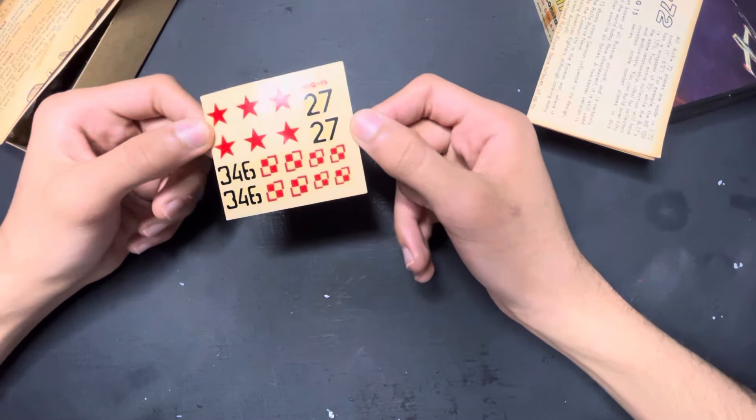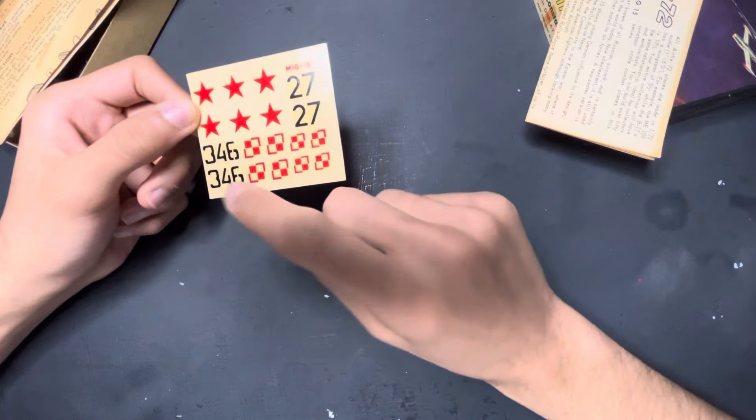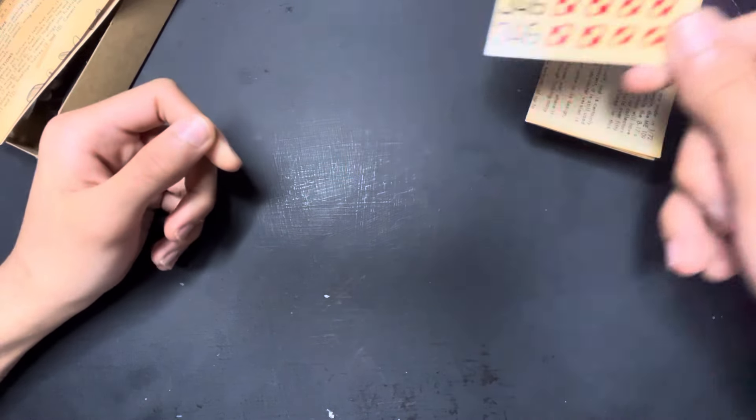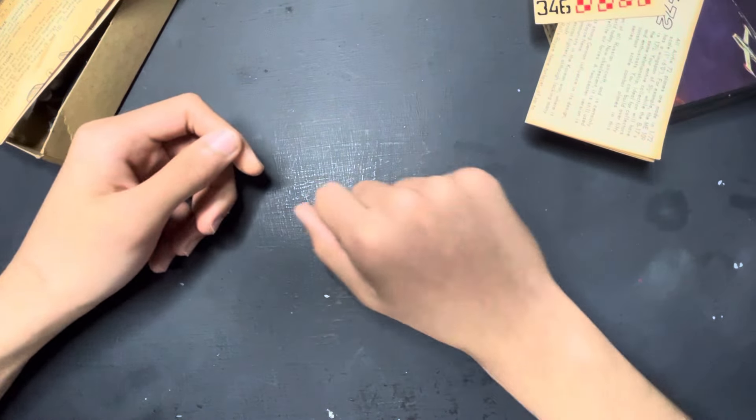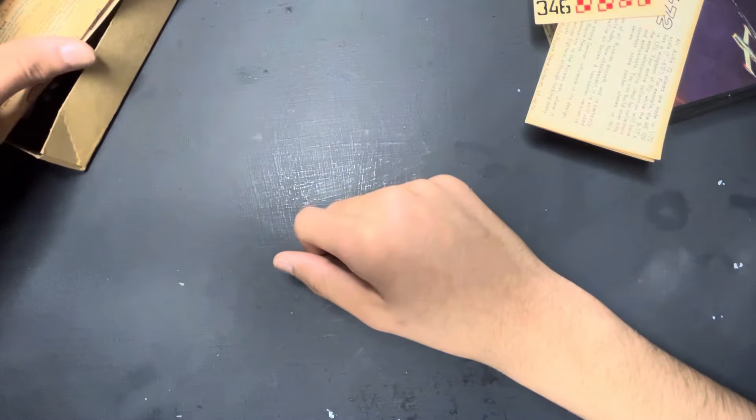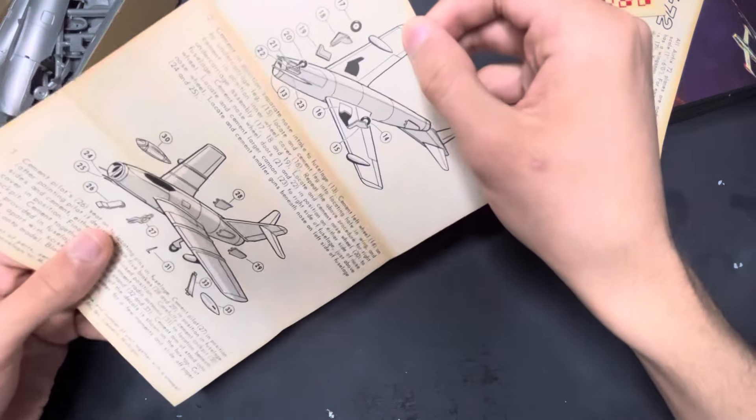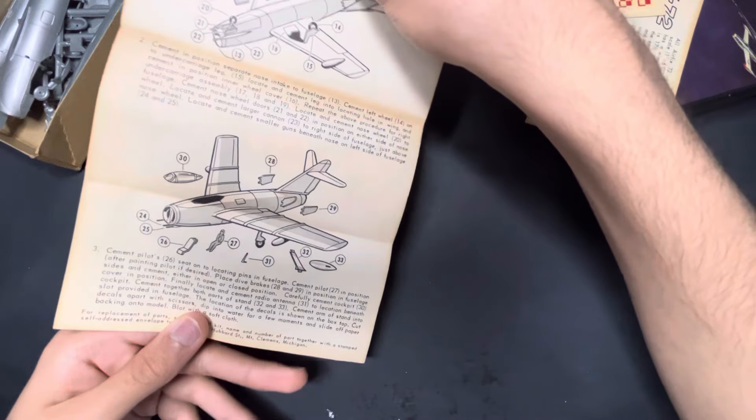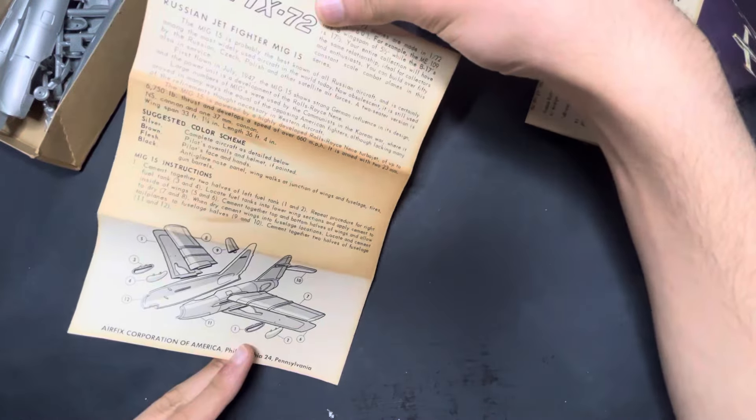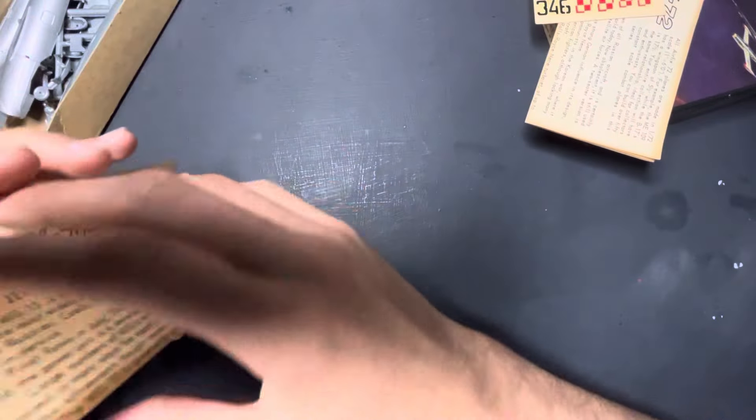But I might also be doing this. Apparently this kit has two MiGs in it, so I could also do just a Polish and an Egyptian one. I think this is just another instruction sheet. They're the same MiG-15. There's a few variants I think. I'm not sure what those variants are, but it's unknown to me.